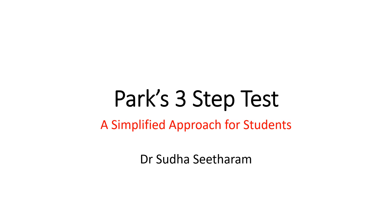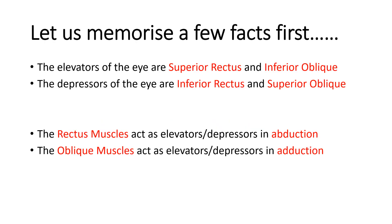Before we proceed to talk about the PARCS 3-step test, I just want to revise a little bit about the extraocular muscles and their basic movements. Let us look at the elevators and depressors of the eye. The elevators of the eye are superior rectus and inferior oblique. The depressors of the eye are inferior rectus and superior oblique.